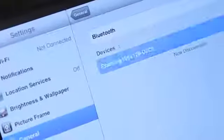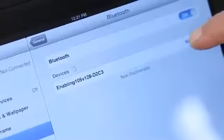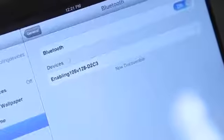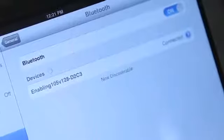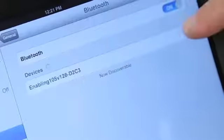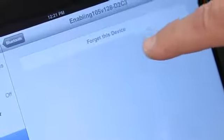In about a second, you'll see it come up as Enabling. Now you just tell it to pair and wait for a confirmation that tells you you're connected. It's now connected. If for any reason you wanted to remove this, you would just click over here and tell it forget this device, and it will wipe it out.